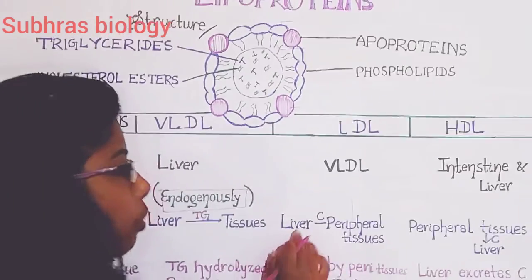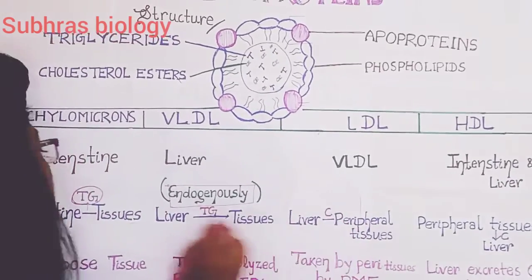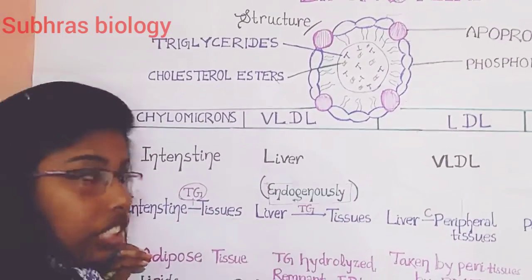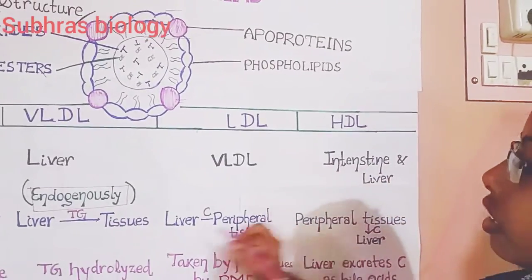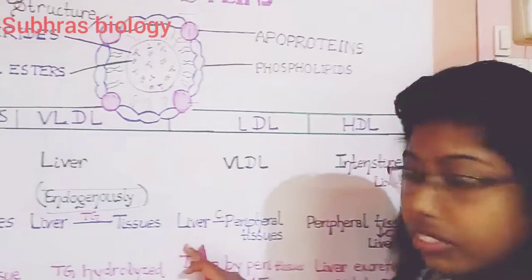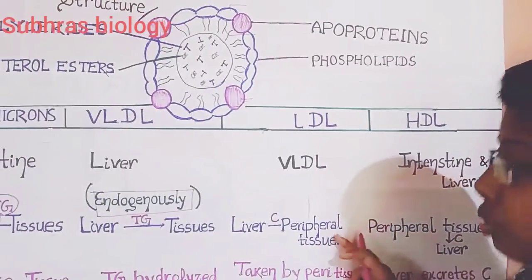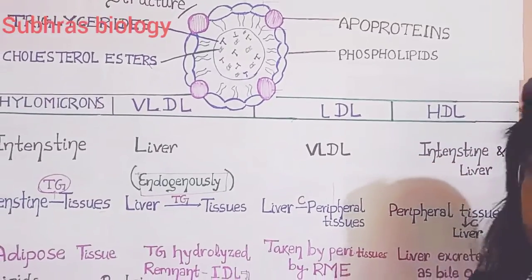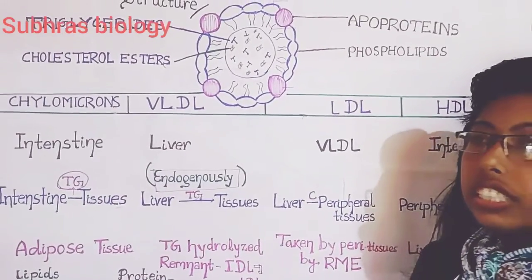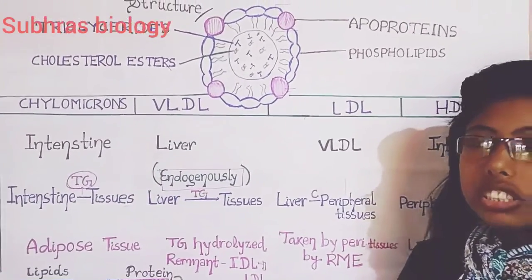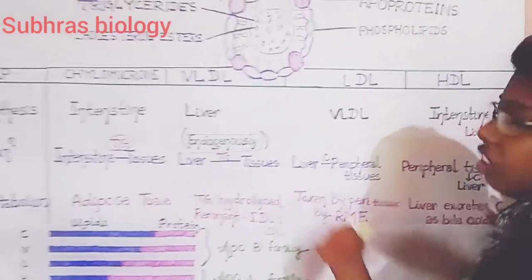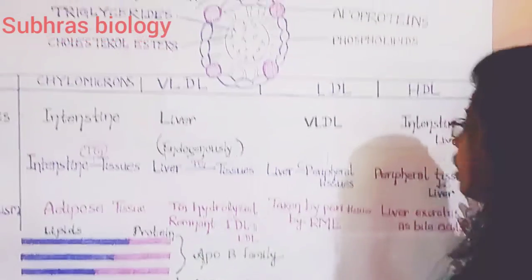Next, we will go to LDL. LDL transports cholesterol. The chylomicrons and VLDL transport triacylglycerols, but LDL, the low-density lipoprotein, transports cholesterol from liver to peripheral tissues. So this is the bad one — if cholesterol gets attached to the peripheral tissues of the blood vessels, disease may occur. For example, atherosclerosis may occur, which can be very fatal.